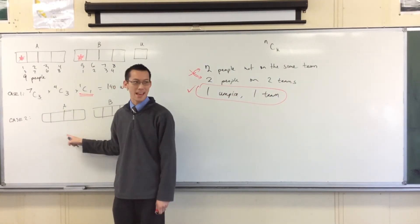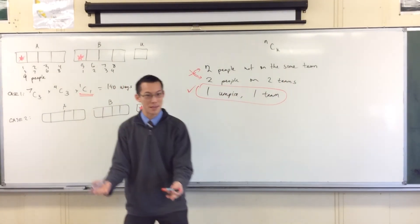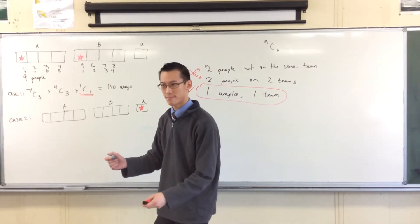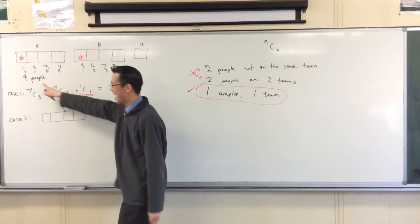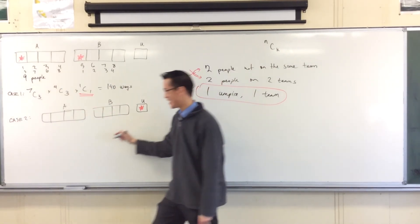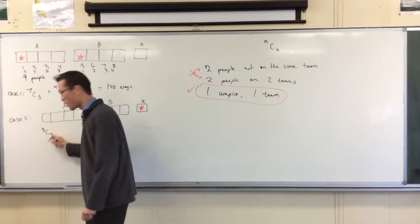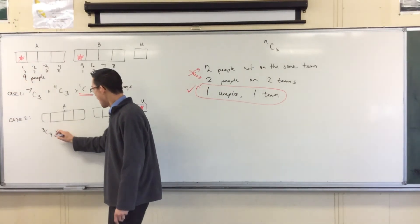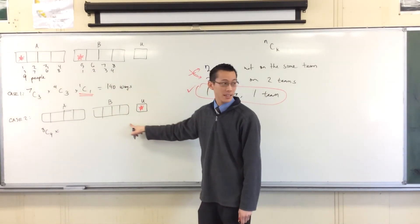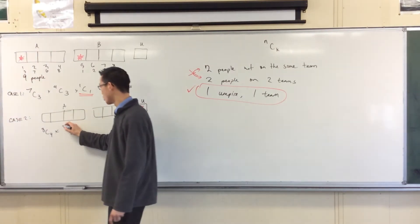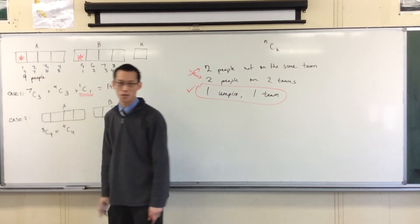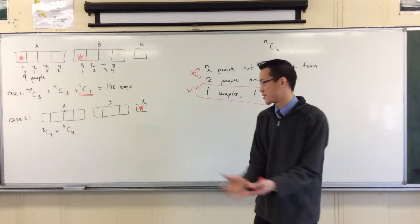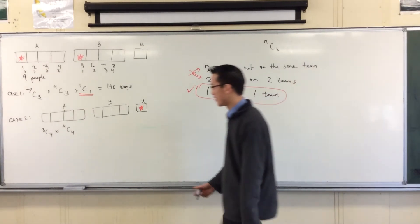Team A, I've got four slots to fill. How many people can I fill it with? Eight. I have eight left. I had nine, and I took off one. So now I've got eight choose four. Is that all right? And then I have to fill team B. Which is, well, I've got four people left, and I'm going to choose four of them. By the way, what's four choose four? One, because, well, I've got nowhere else to put them, do I?